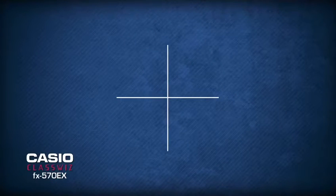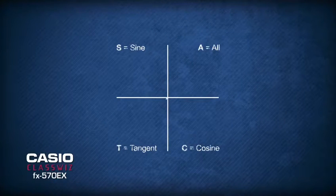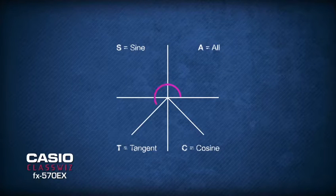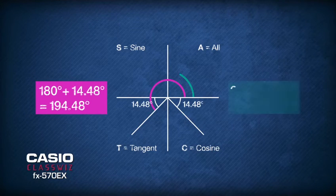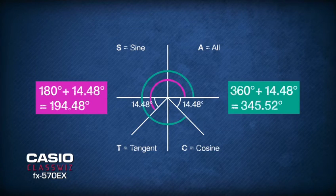Based on our knowledge of ASTC of the 4 quadrants, negative ratio of sin lies in the 3rd and the 4th quadrant, and the basic angle lies between the angle line and the horizontal. We can then solve that θ is either 194.48 degrees or 345.52 degrees.